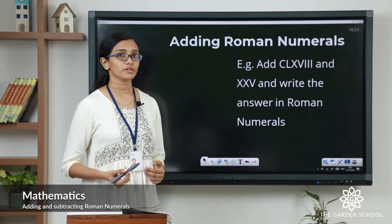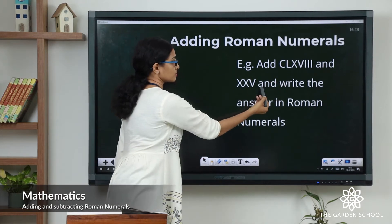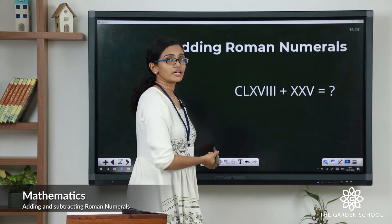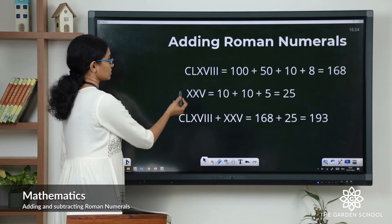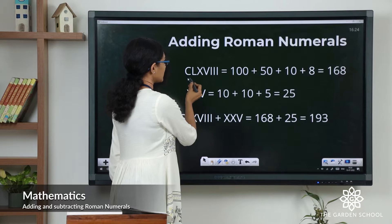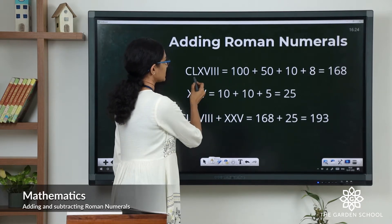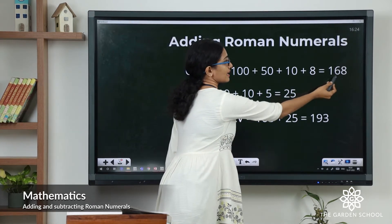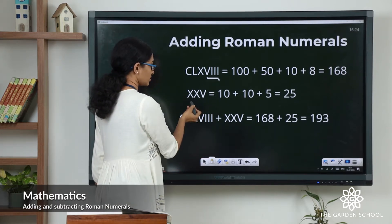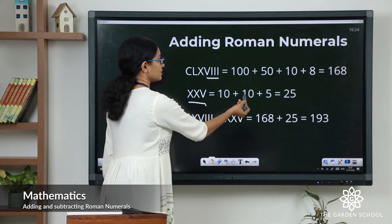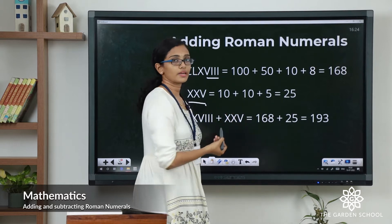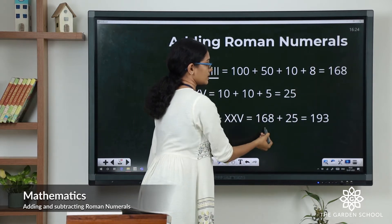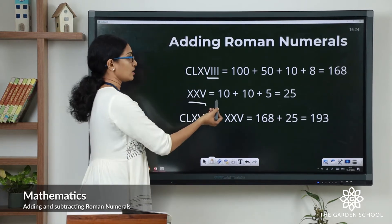Now let's see how we can add two Roman numerals. We have an example — add these two Roman numerals and write down the answer in Roman numerals. First we will find out the equivalent number for each numeral. The first number: C represents 100, L is 50, X represents 10, and this part represents 8. Adding all the numbers we get the equivalent value of 168. The second Roman numeral: X represents 10, plus another 10, then 5 — so the total is 25.